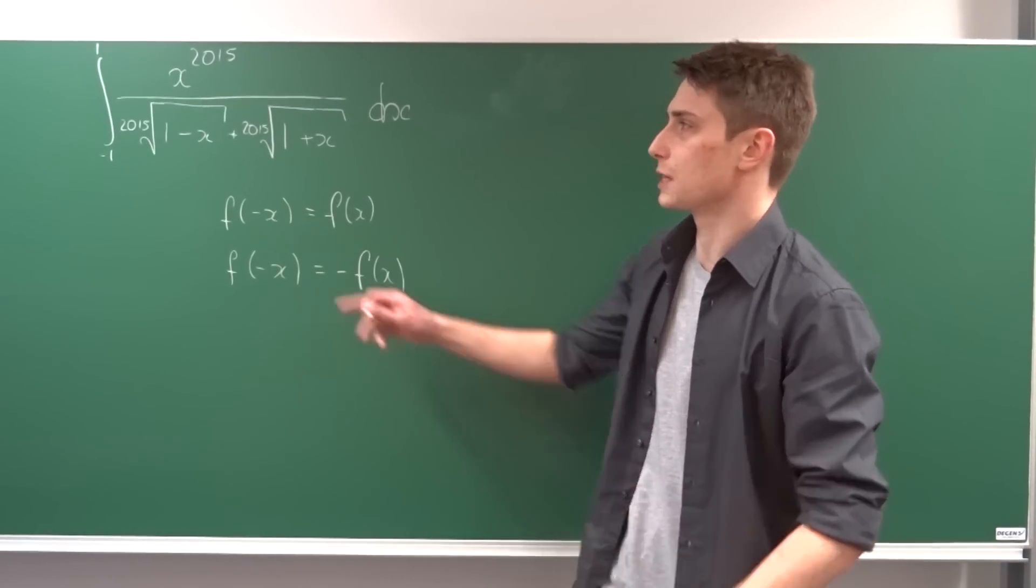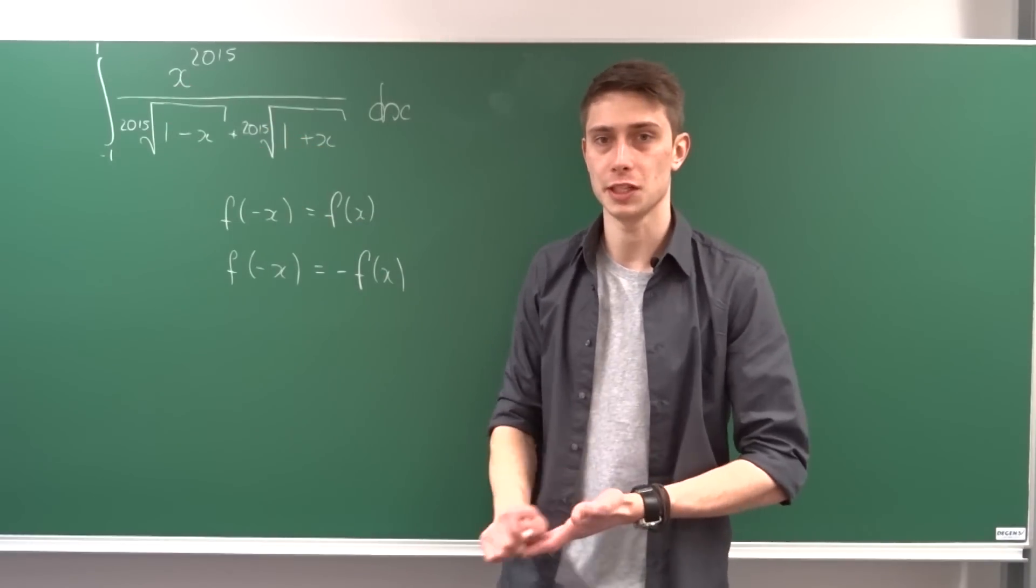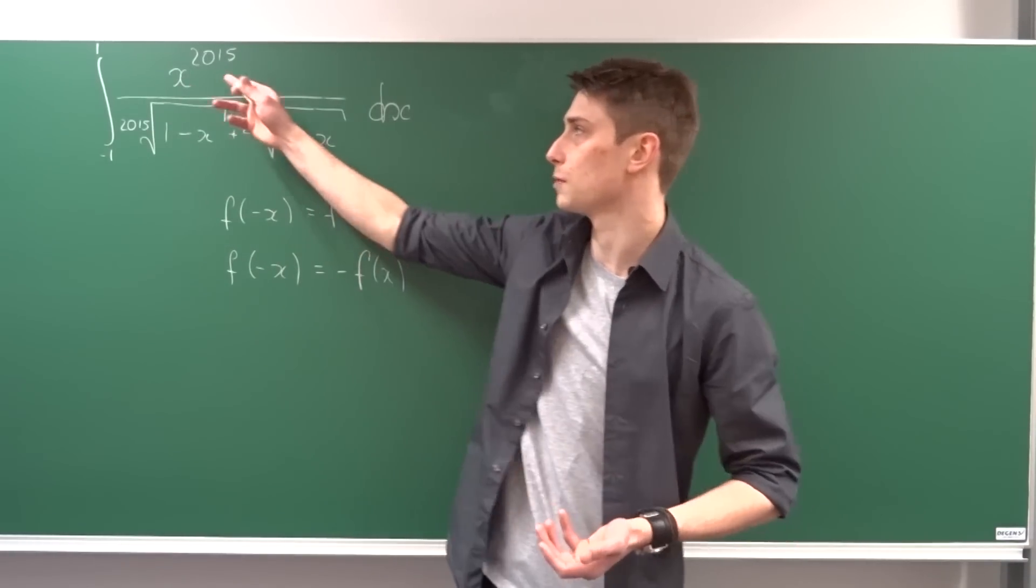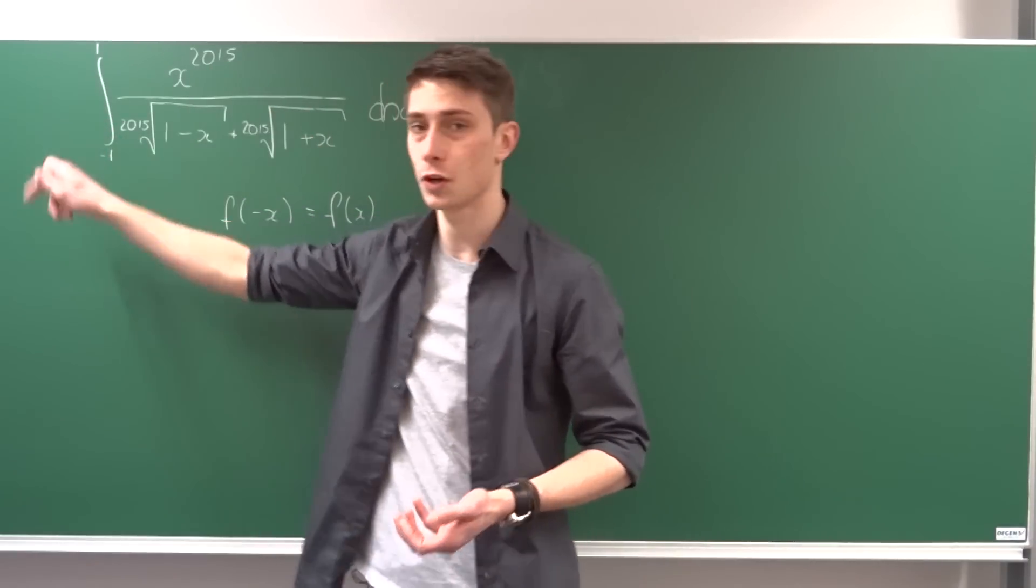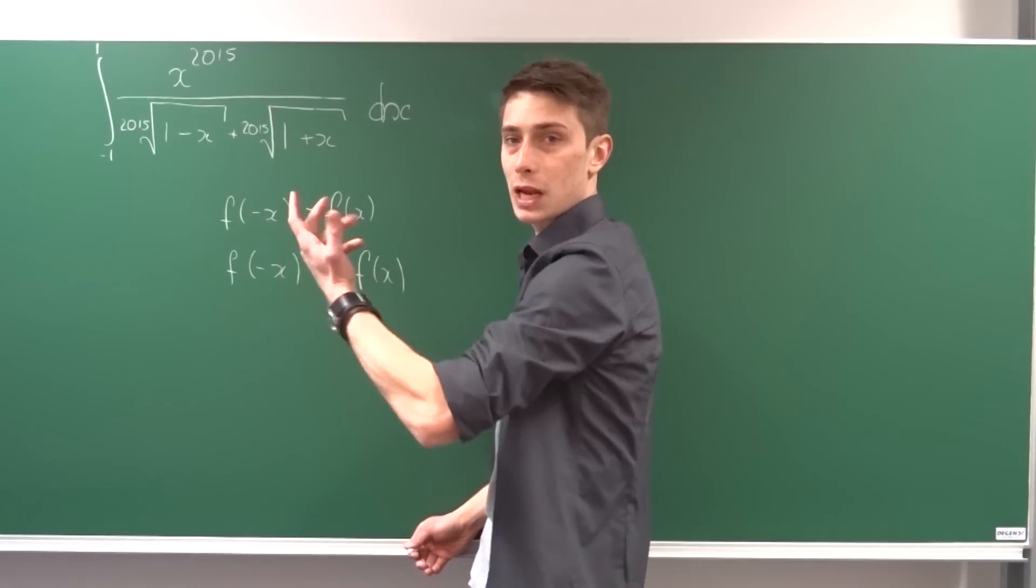If you plug in minus x into here, well, minus x to the 2015 is just minus 1 times x to the 2015, because that's an odd exponent right here. That's great. We can bring this minus to the front. And if you plug in minus x into here, that's 1 plus x.